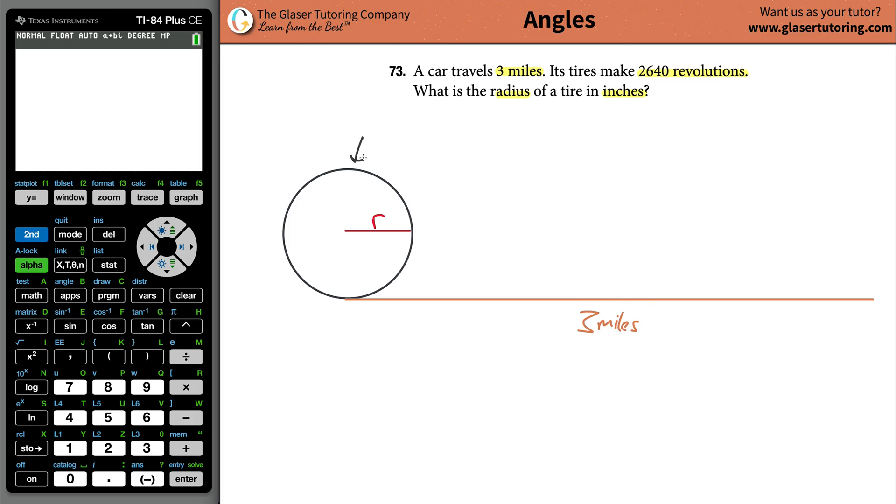Now, if you imagine this tire rotating, it's going to move to the right, the tire will rotate clockwise. As the tire rotates clockwise, points will begin to move. What's actually happening is that the length of the ground being covered equals the length of the tire covering the ground.